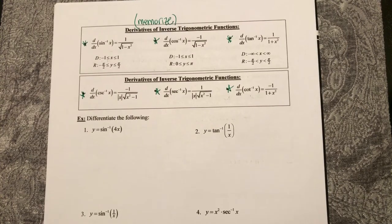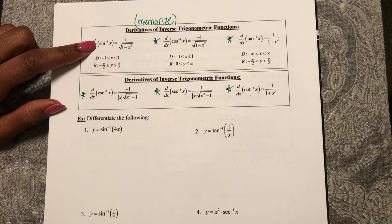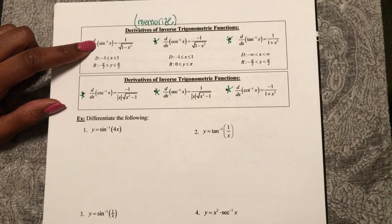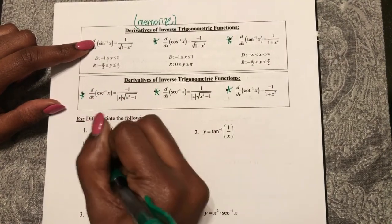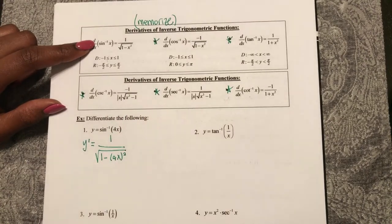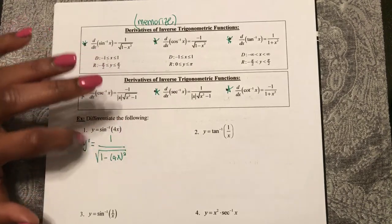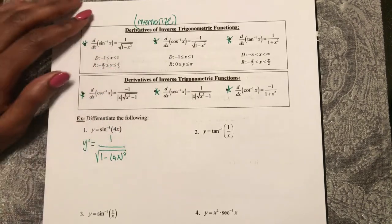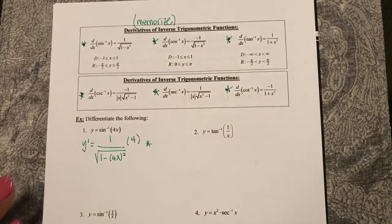So in number one, I have y equals sine inverse of 4x. The derivative of sine inverse x is 1 over the square root of 1 minus x squared. So for this function, y prime is 1 over the square root of 1 minus 4x squared, because instead of x, I have 4x. Now taking the derivative, this is a chain rule. What's the derivative of the inside? Multiplied by 4. So we'll leave this unsimplified.